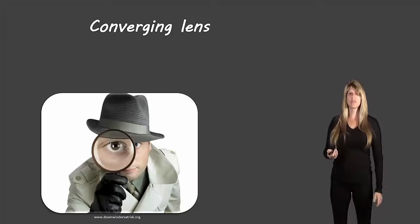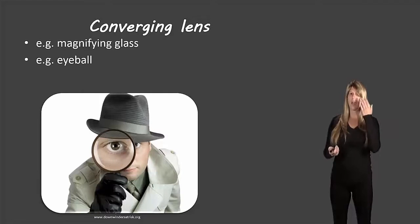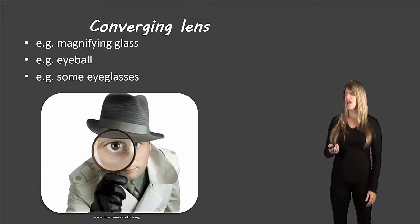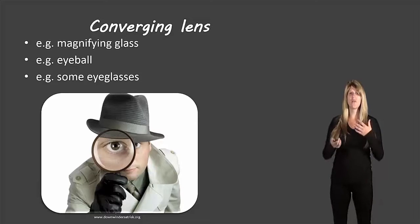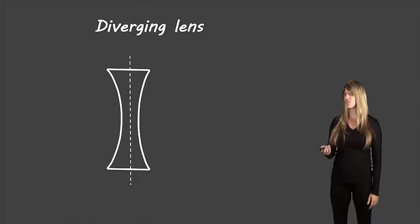So what types of lenses are converging lenses? Well magnifying glasses are converging lenses. Your eyeball is a converging lens and some eyeglasses depending on what the disorder of your eye happens to be. Those can also be converging lenses.